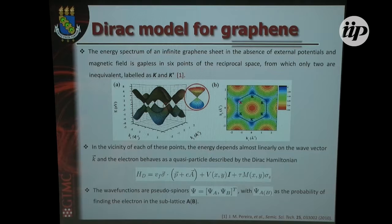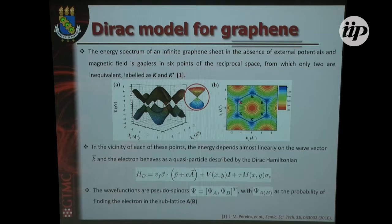From the six points where the conduction and valence bands touch each other, two of them are non-equivalent. So K and K prime are the two Dirac cones where the low-energy electrons are located. They are described by the Dirac equation as I told you earlier — like massless Dirac fermions — described by this equation that is linear in momentum.